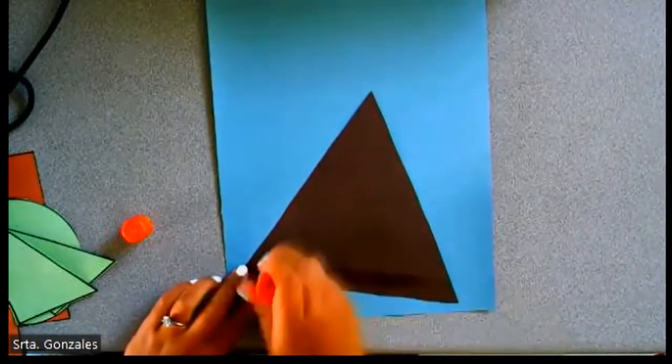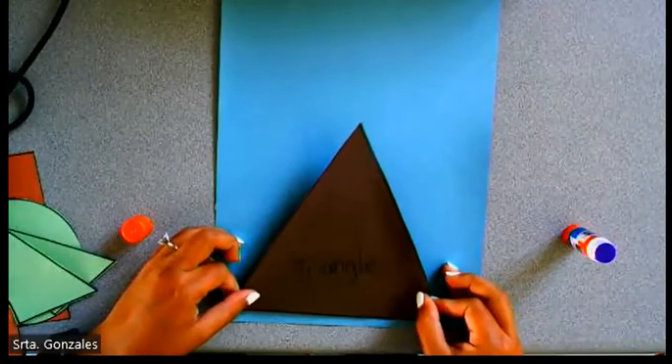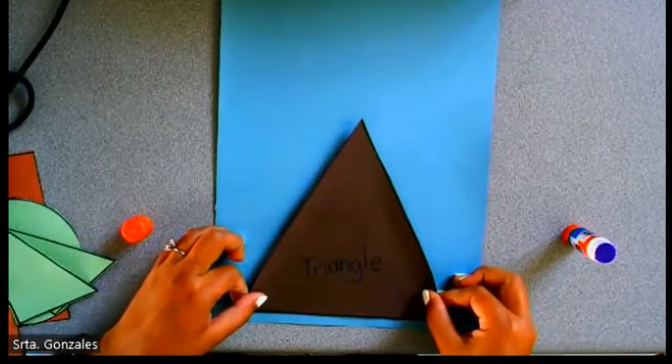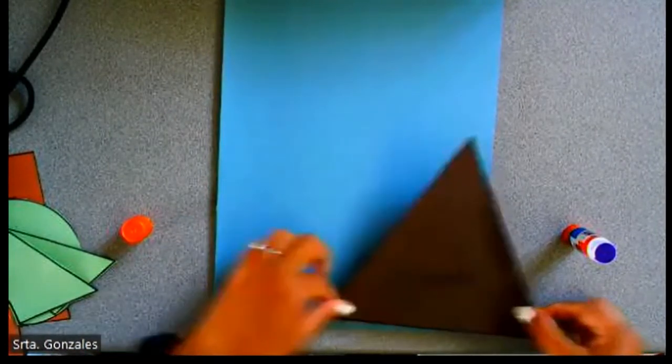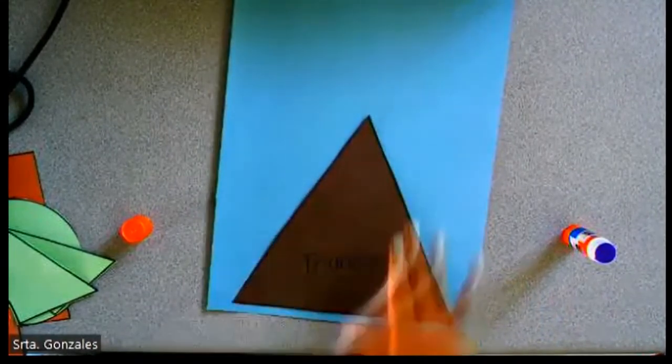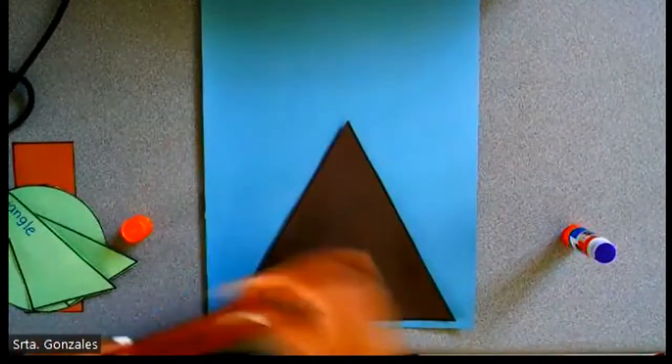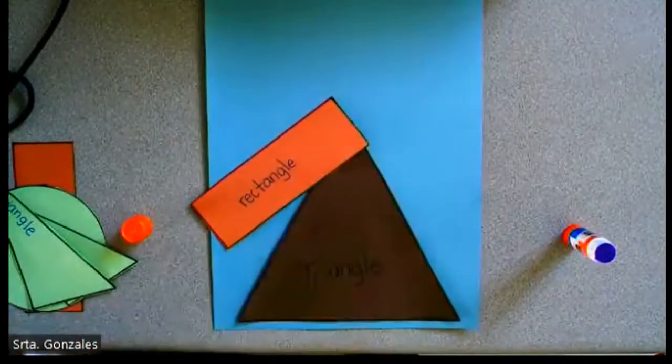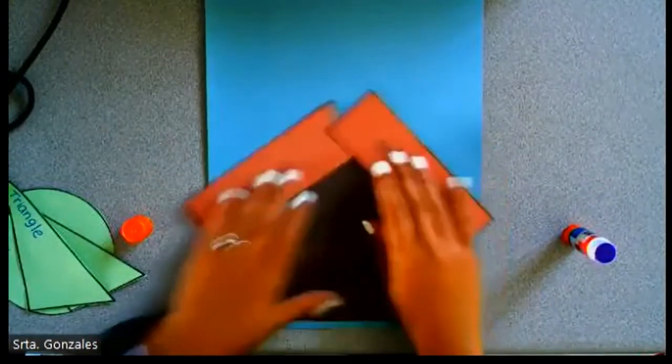Let's apply some glue. In the middle, at the bottom. Do not go to the left, do not go to the right. Only in the middle. Perfect! Find your two rectangles. Let's put them on top of the triangle, overlapping.